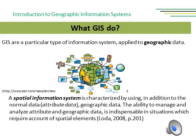GIS are a particular type of information system applied to geographic data. For LODA, an information system is any organized system for the collection, organization, storage, and communication of information. So a spatial information system is characterized by using, in addition to the normal data called attribute data, also geographic data. The ability to manage and analyze attribute and geographic data is fundamental in situations which require to take into account spatial elements.